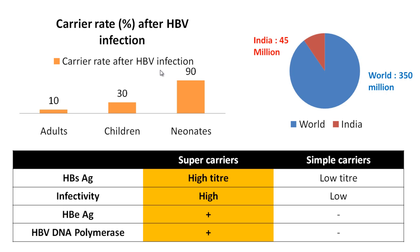There are two types of hepatitis B virus carriers: super carriers and simple carriers. Super carriers have very high infectivity with consistently high levels of hepatitis B surface antigen, HBe antigen, and HBV DNA polymerase.